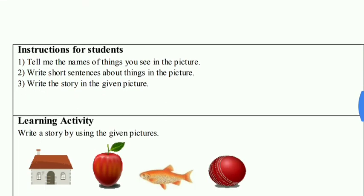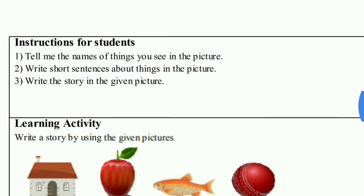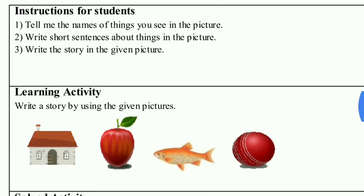Instructions for students: Tell me the names of things you see in the picture. Write short sentences about things in the picture. Write about whatever things you see in the pictures — write short sentences about them, also in English. Then write the story in the given picture.